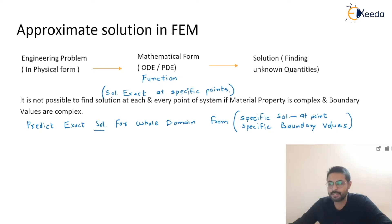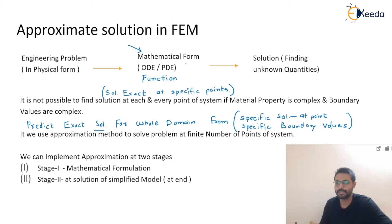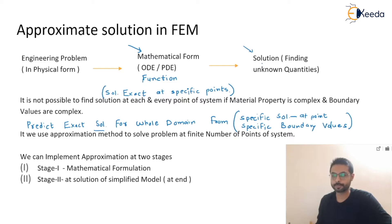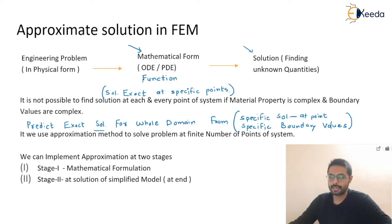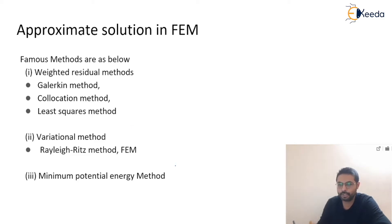We can apply this approximation method at various stages. Stage one is while we are converting the physical problem into mathematical form. We can also apply it at the end of the procedure while finding out the solution. To find the approximate solution we have various methods like the weighted residual method, variational method, and minimum potential energy method.